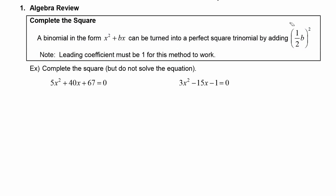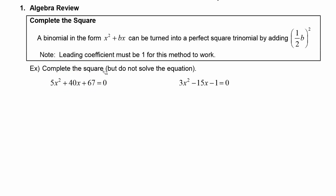Let's look at an example now where we have to complete the square, but not solve the equation — we just want to review the process. In this first equation, we will take the plus 67 and move it to the right-hand side as negative 67. Then we'll factor out the five so that the leading coefficient will be one, giving us five times x squared plus 8x, leaving some space, then closing the parenthesis.